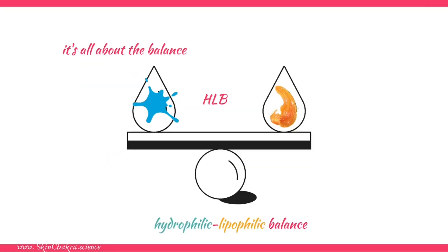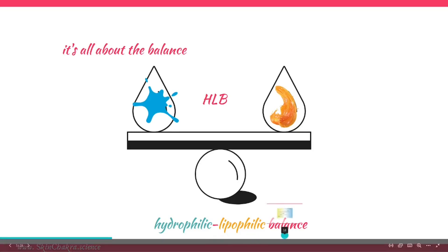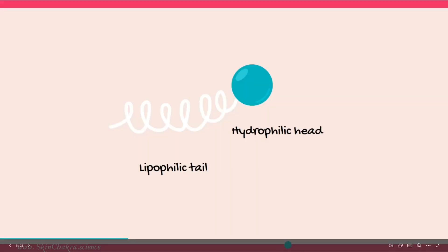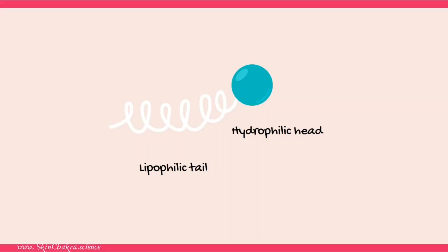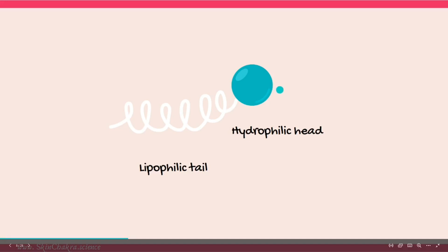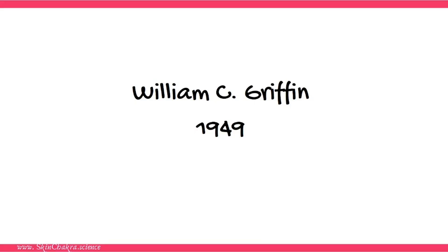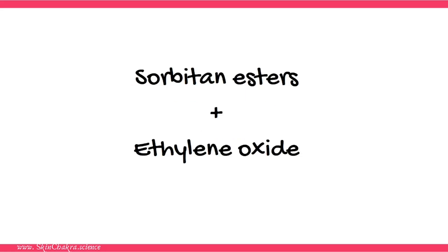To predict which properties a surfactant will have, we refer to the HLB system — the Hydrophilic-Lipophilic Balance. This refers back to the structure of surfactants: the balance between the lipophilic part and the hydrophilic part of the molecule. This model was first expressed in 1949 by William Griffin.